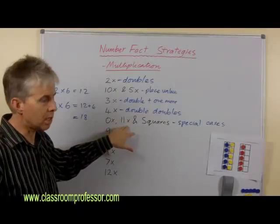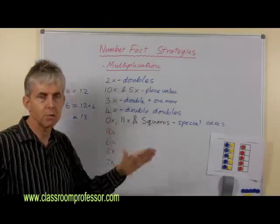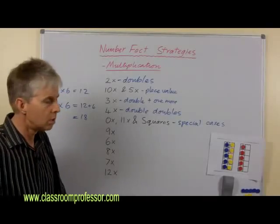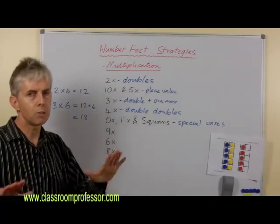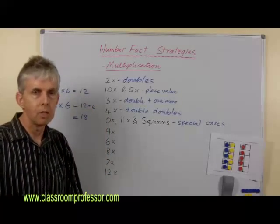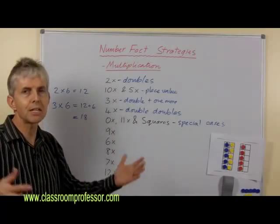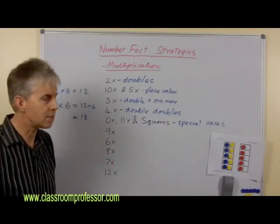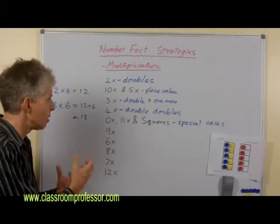Eleven times is a special case. This is another set of number facts that students really enjoy doing because they're so simple. But we should highlight for students why they're so simple. Of course, eleven is made up of one ten and one one. And if you multiply both of those by the same number, you get repeated digits, at least up to 99. So six elevens will be six tens and six ones. And of course, that's 66. So it's nice and easy for students. They love doing them, but we can help them understand why.